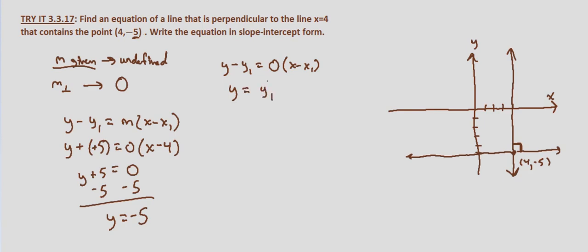So anytime we have a vertical line and we're asked for the equation of a line that is perpendicular to that vertical line, we know it's going to be horizontal, so it's just going to be the y-coordinate of whatever point we're given.